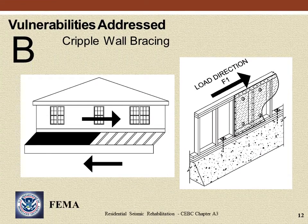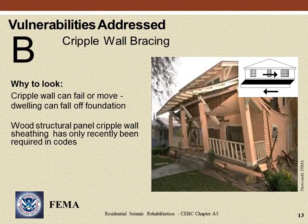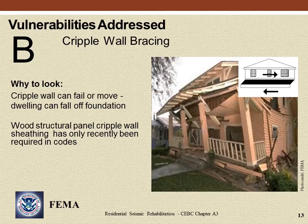CEBC Chapter A3 Rehabilitation Design also addresses cripple wall bracing, Vulnerability B. A cripple wall is a partial height wall that extends from the foundation to the first framed floor. Cripple walls generally enclose crawl spaces but are also found in partial basements. Cripple wall failures have been commonly seen in moderate to major earthquakes. Rehabilitation of cripple walls provides a very large earthquake bracing improvement at small cost. Building codes for new dwellings now require plywood or OSB sheathing for cripple wall bracing in areas of high seismic hazard.